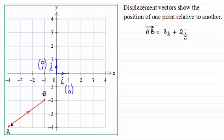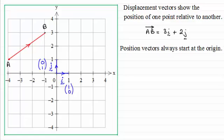Now I'll move the vector AB out the way, let's just move it back to here. So what do we mean by a position vector? Well, position vectors always start at the origin.